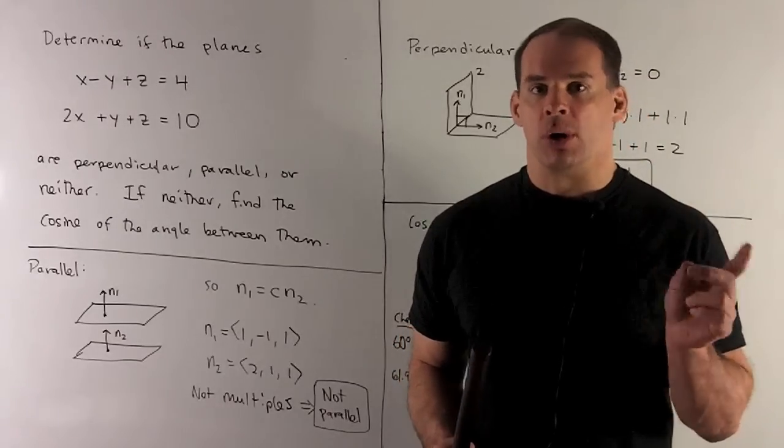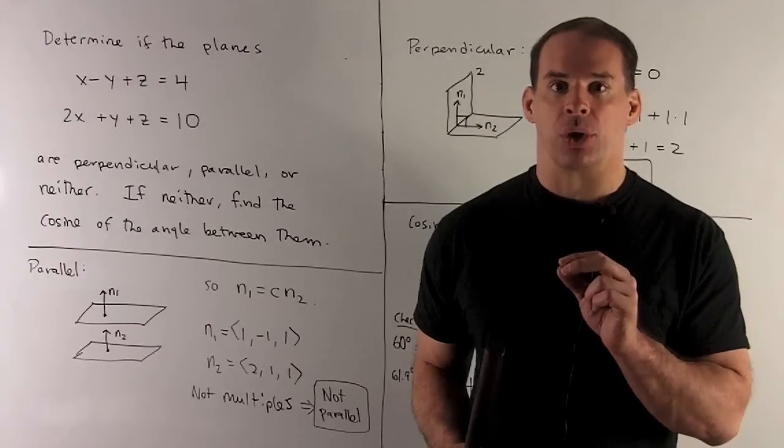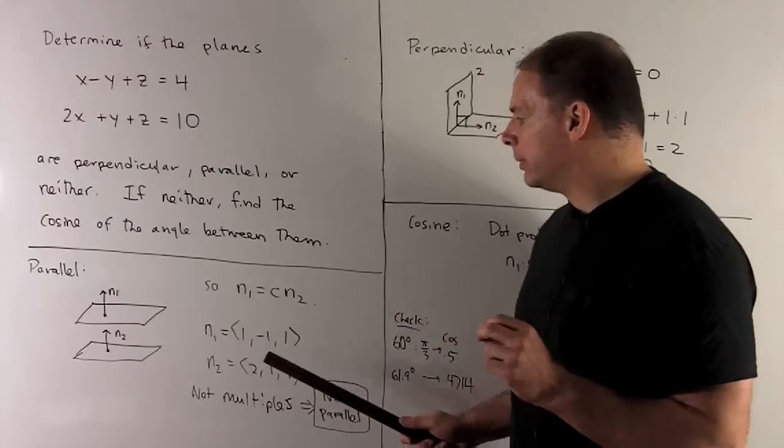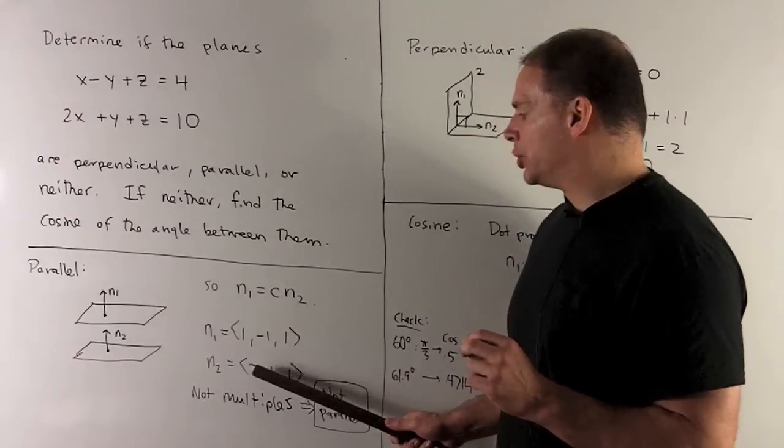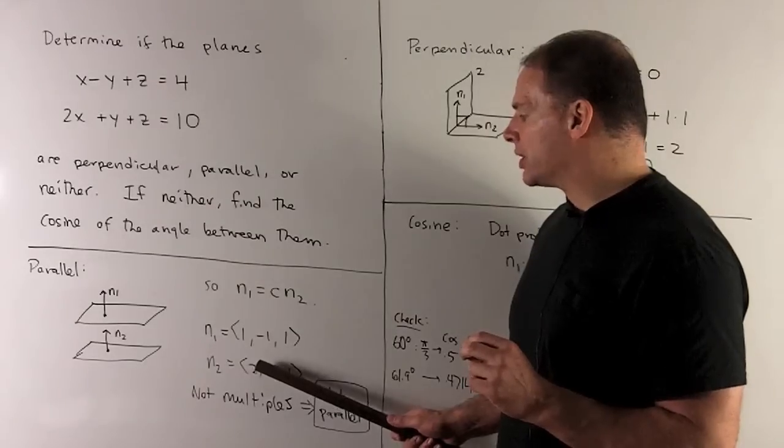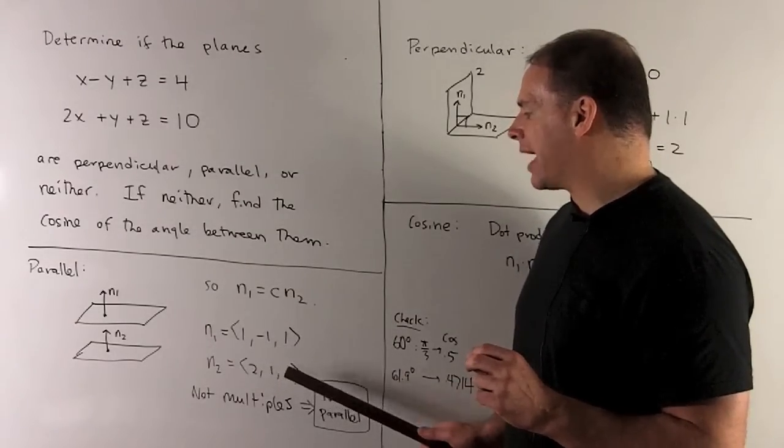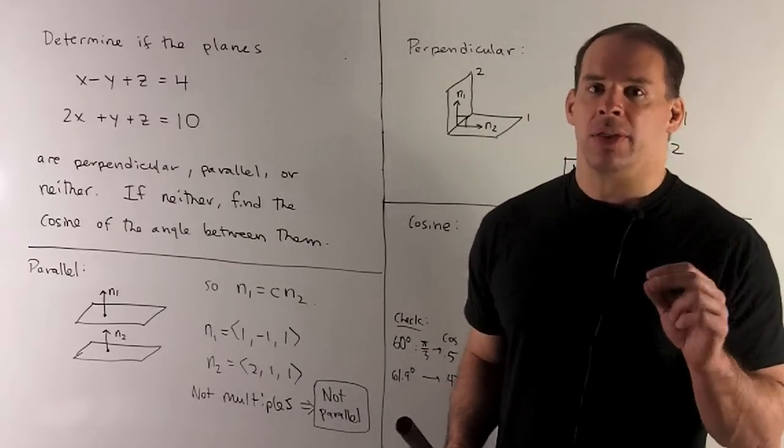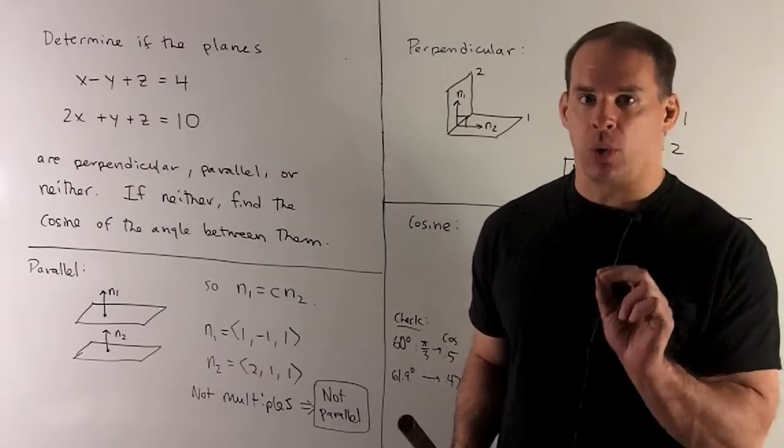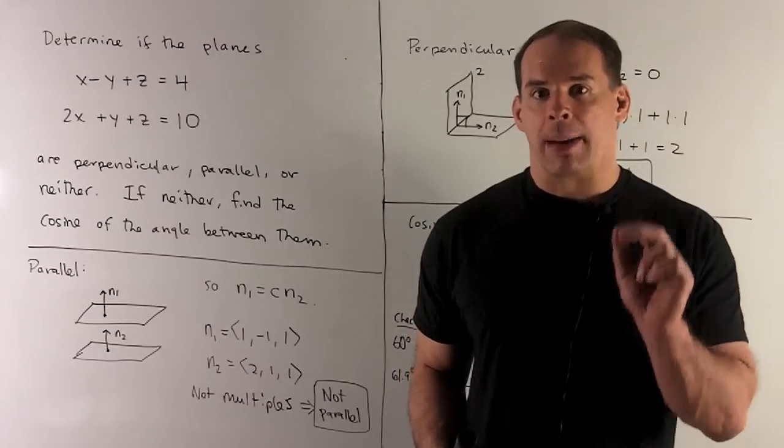Now, to see if there are multiples of one another, you could just check the x coordinate and then see if it follows through. So if you note, n2 would have to be 2 times n1 if we just checked the x. But if you notice, we're different here by a 1 and a minus 1. So we're off by a minus 1 there. And then here, we're off by just 1. Point is, the 2 isn't working for the y or z coordinates. So we're not a multiple of one another. So we're not parallel.